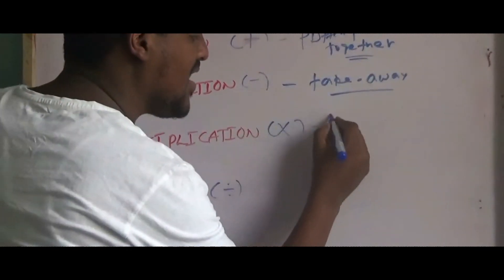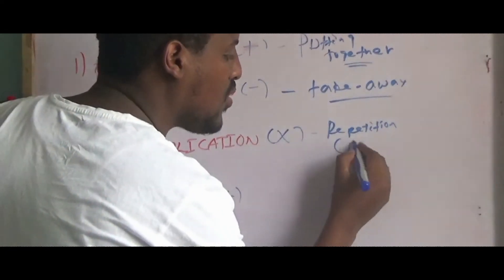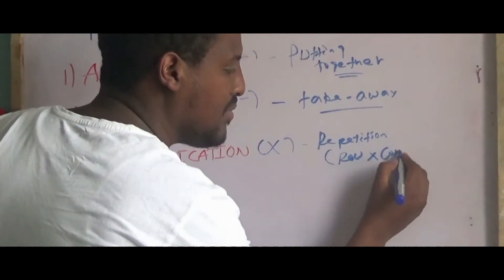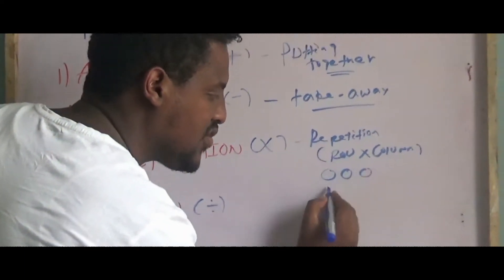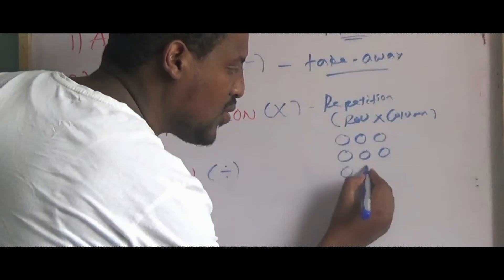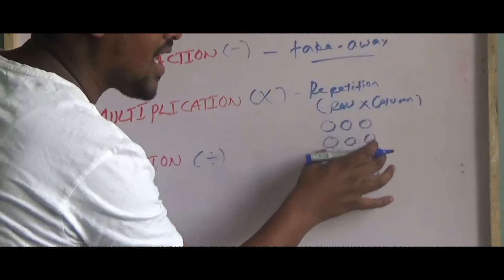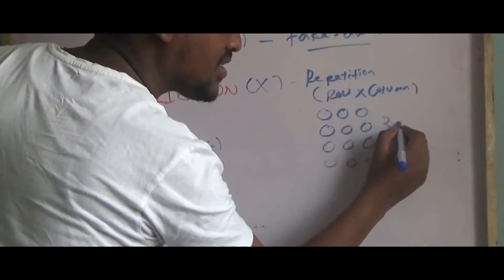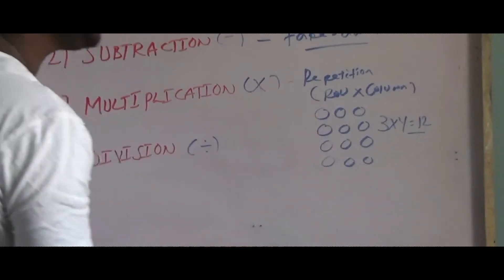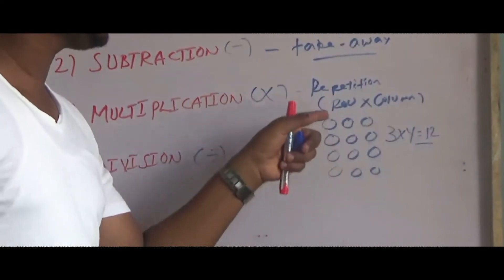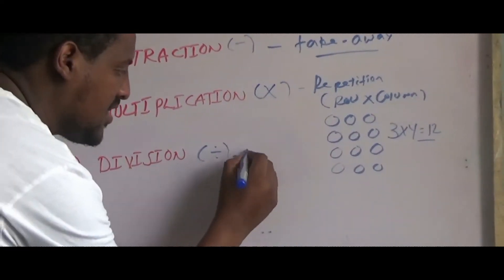What is multiplication? Repetition. Multiplication means rows times columns. Division means sharing equally.